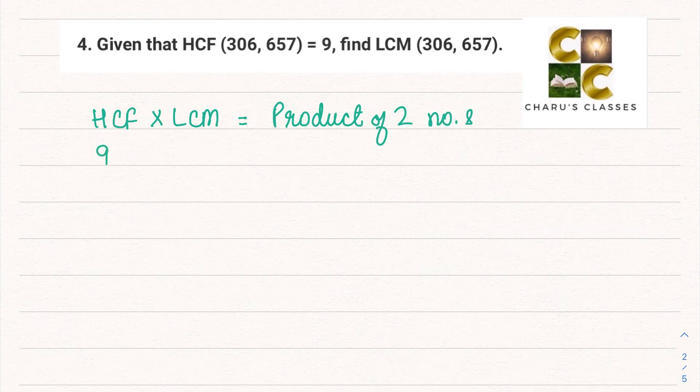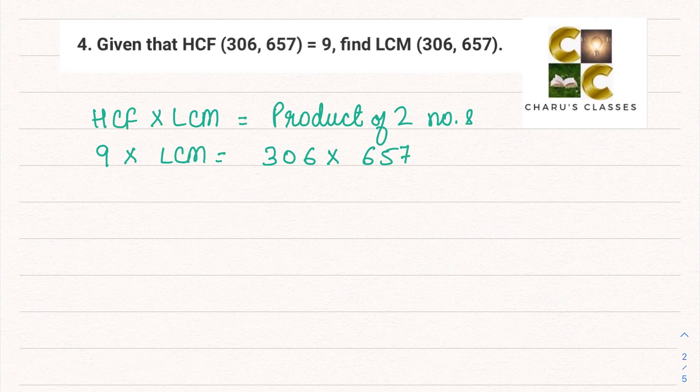So HCF here is 9 given. LCM we have to find out. That is equal to product of two numbers, meaning their multiplication. So that is equal to 306 × 657. That means LCM is equal to this divided by 9.